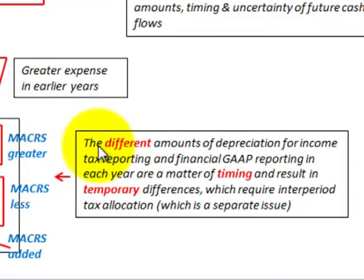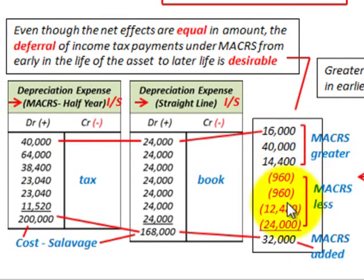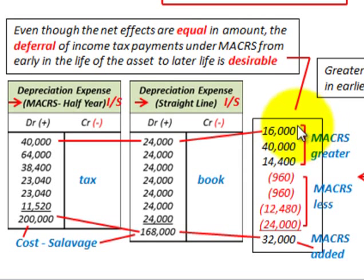To summarize: the different amounts of depreciation for income tax reporting versus GAAP financial reporting in each year are a matter of timing, resulting in temporary differences which require inter-period tax allocation — a separate issue. With the tax depreciation method, we had greater depreciation expense in the earlier years, reducing net income in those earlier years, which is desirable for most companies.